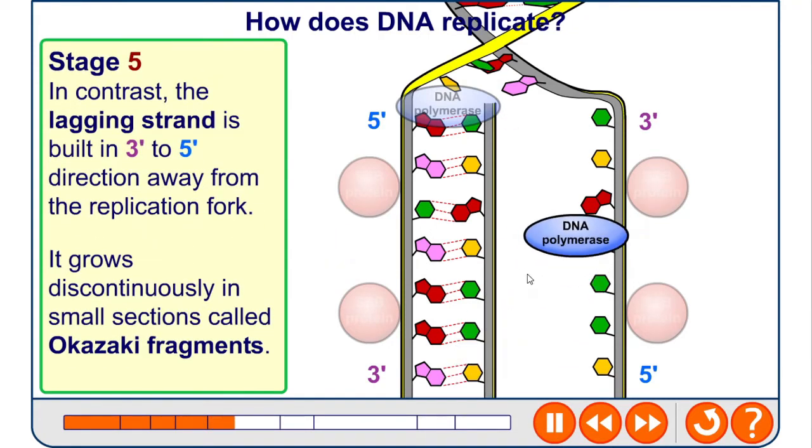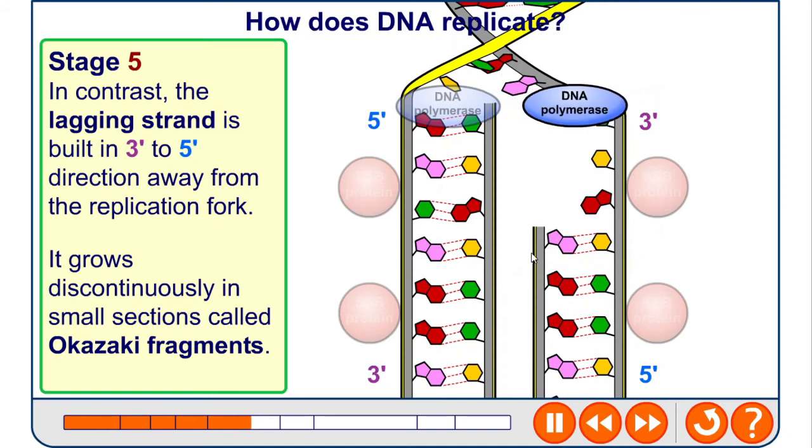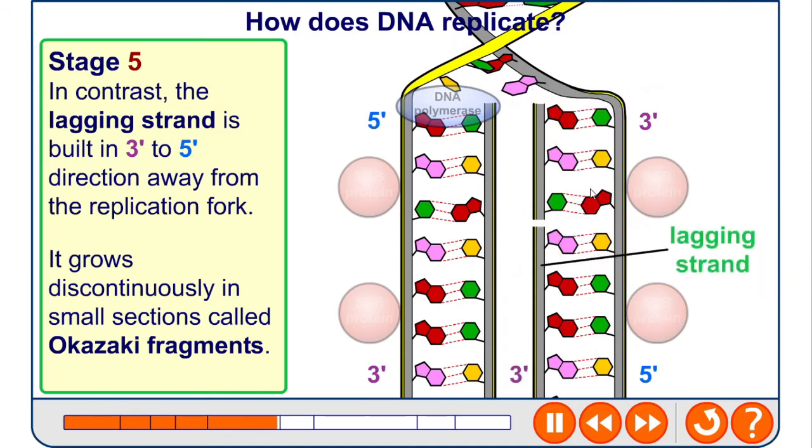The opposite side, the other side, is called the lagging strand, which gets built in a 3' to 5' direction away from the replication fork. It's essentially the opposite of what's happening on this side. It's being read in the 3' to 5' direction because this strand is anti-parallel to this.